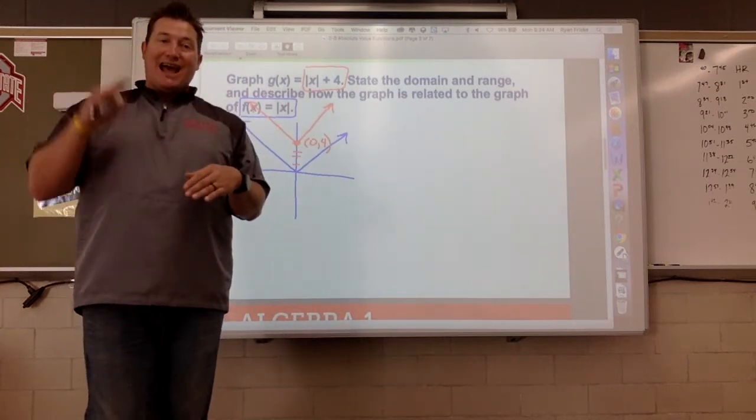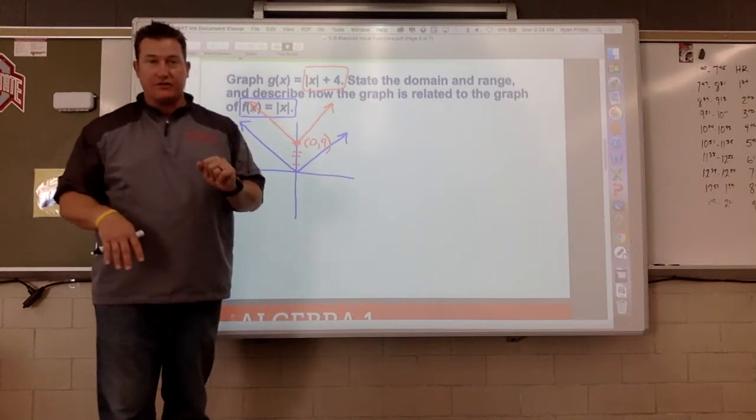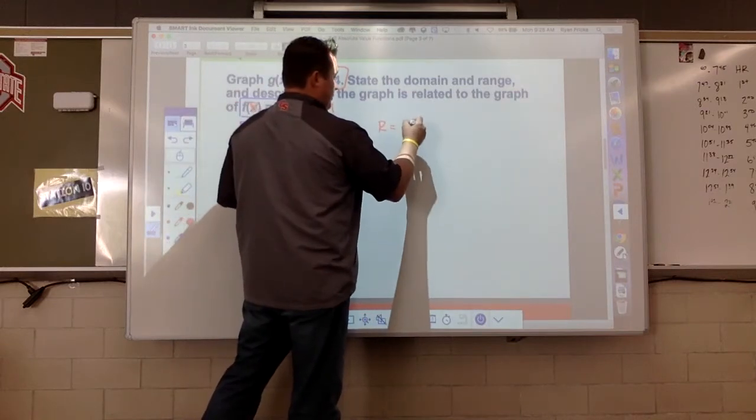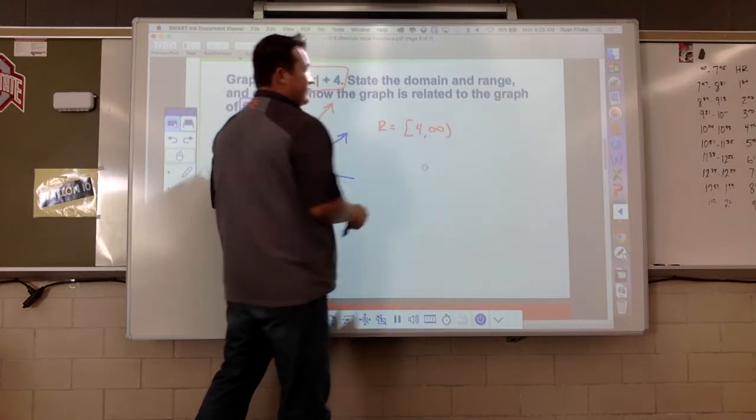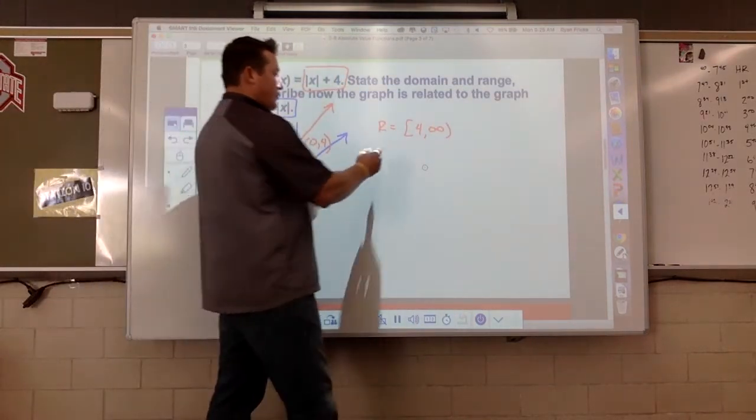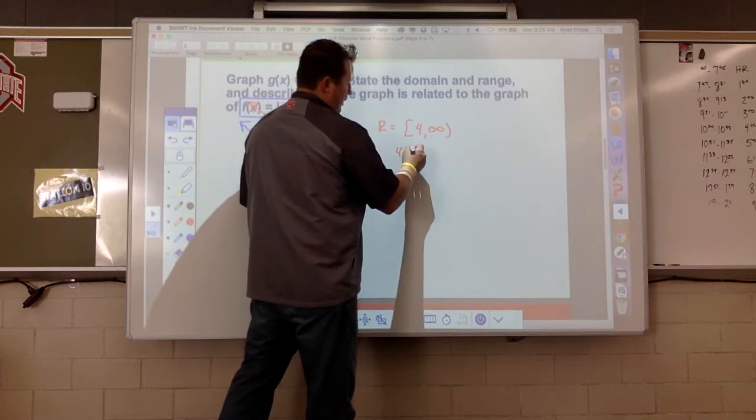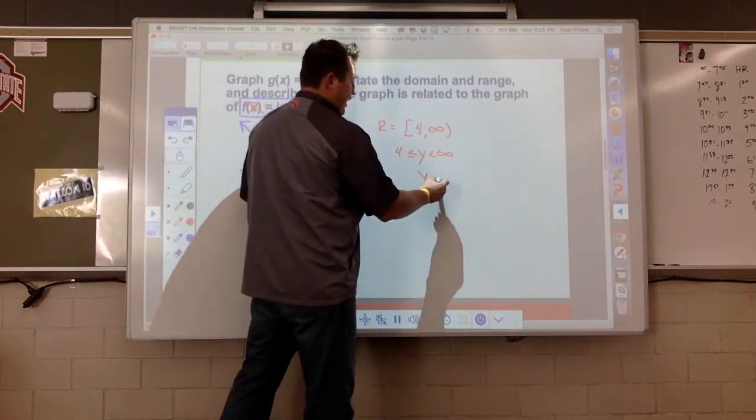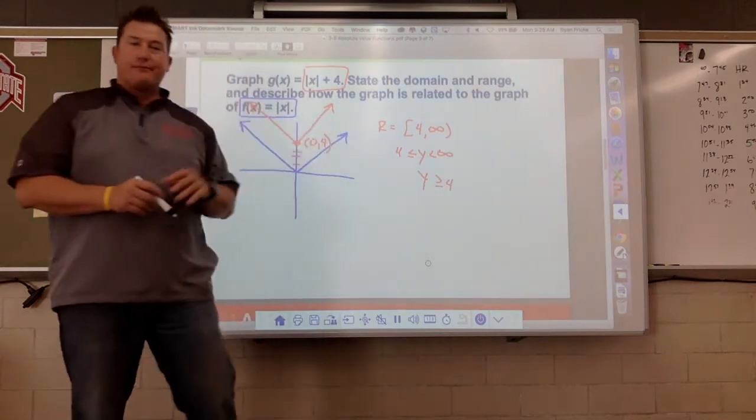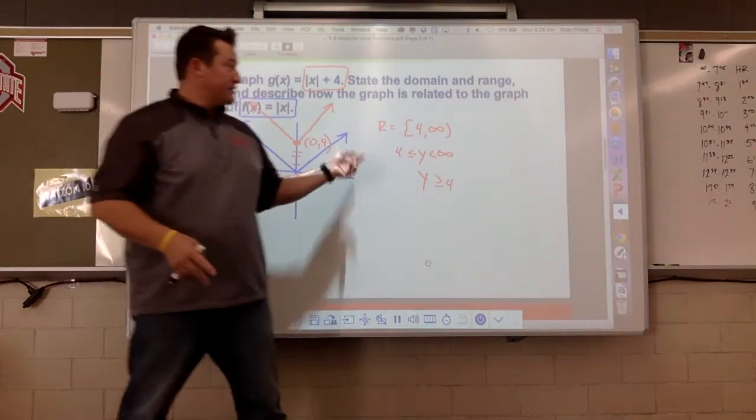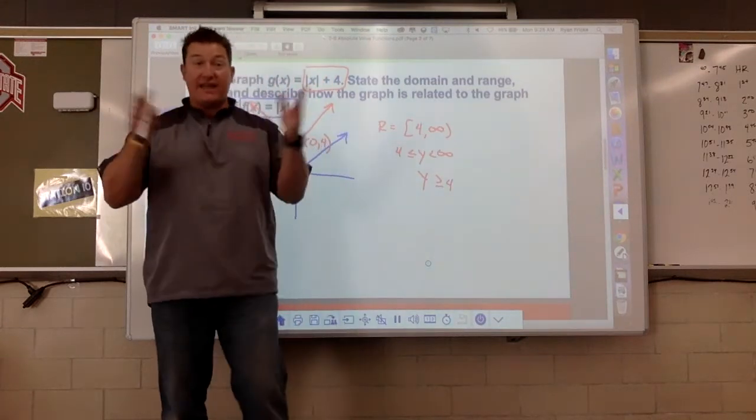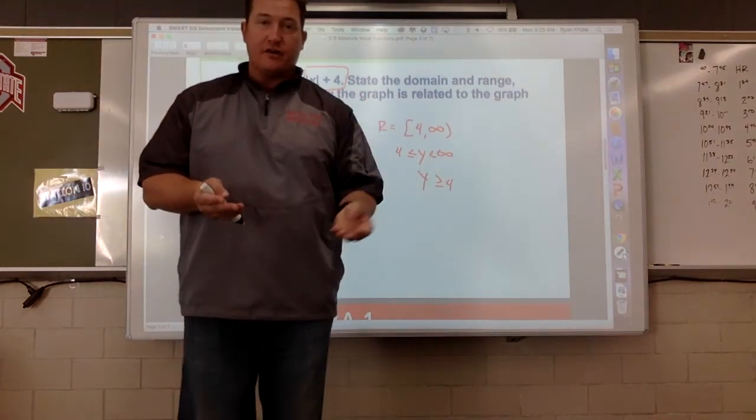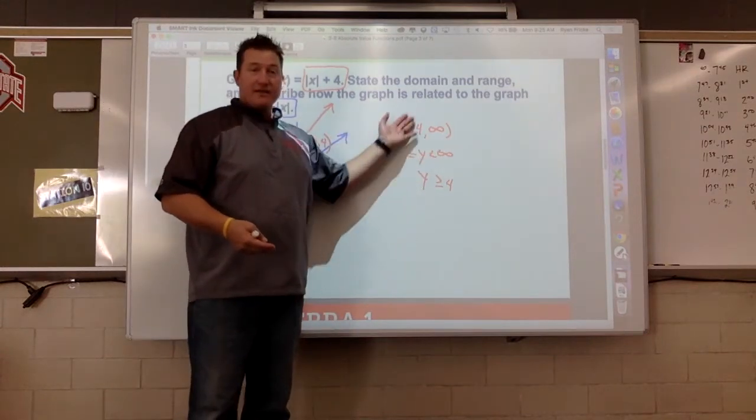However you guys want to write that. Range, different story. It's not all real numbers. Again, how low does it go? Well, it doesn't get any lower than that vertex right there at four. And then it goes up forever. So on the range, if you wanted to write that as a four to infinity, that makes me happy. If you want to write it as a compound inequality, less than or equal to y less than infinity, that's fine too. If you'd like to write it as all the y values that are greater than or equal to four, again, three different ways.